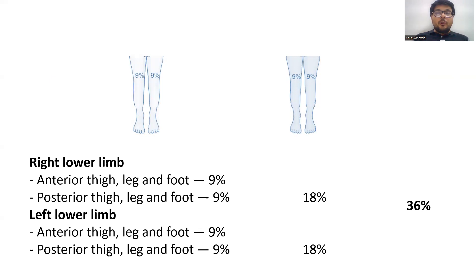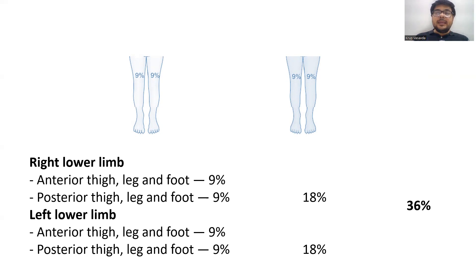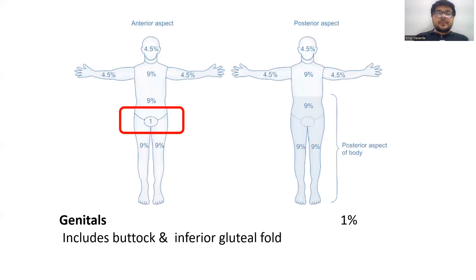For the lower limbs: right lower limb anterior thigh, leg, and foot is 9%, and right posterior is 9%. Similarly, left lower limb anterior thigh, leg, and foot is 9%, and posterior thigh is 9%. So the total for each lower limb is 18%, and for both right and left — anterior and posterior — 18% plus 18% equals 36%. Genitals, including buttocks and inferior gluteal region, account for 1%.